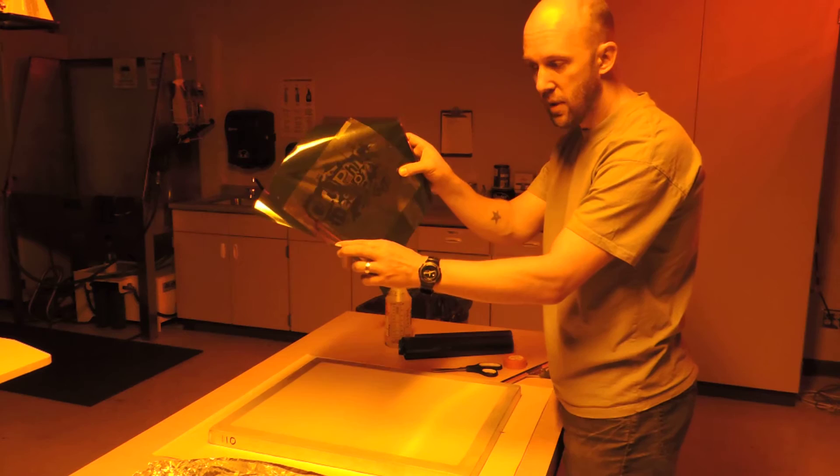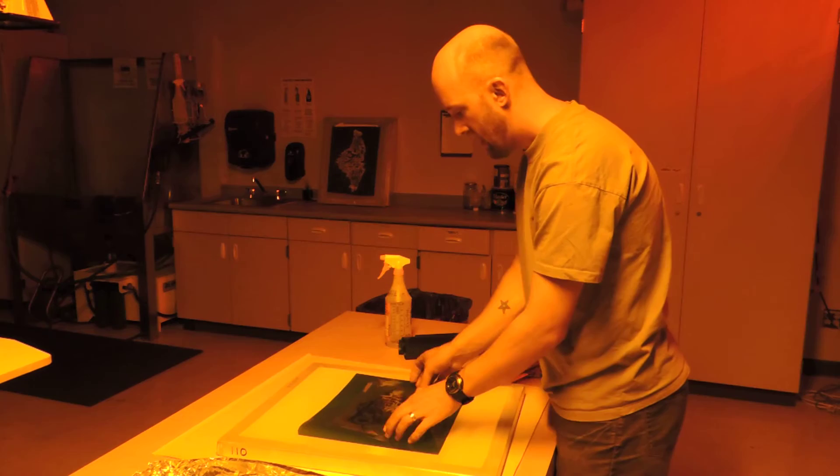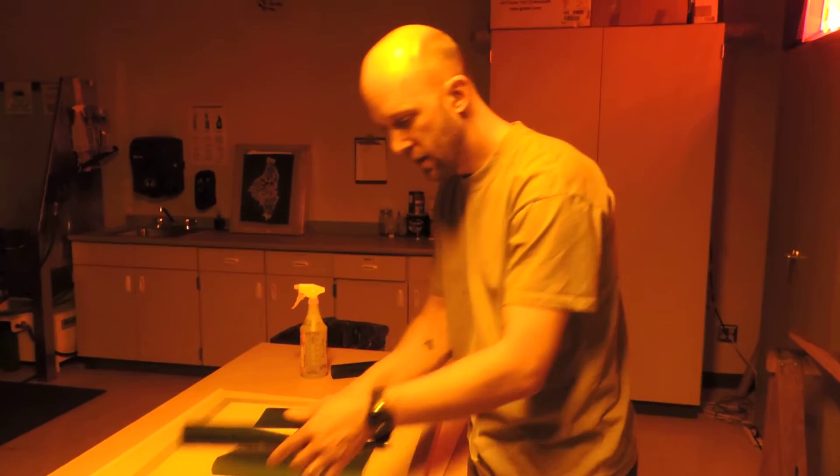Now I have my emulsion set to the size of my transparency. I know that my emulsion needs to go this way because this is the way I am going to be putting it onto my printing press. I am going to set my transparency off to the side again. This is the emulsion I am going to use.